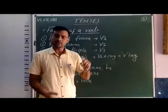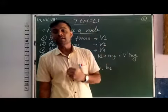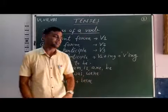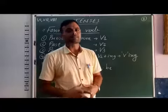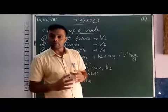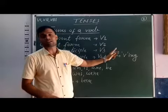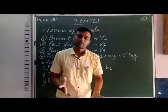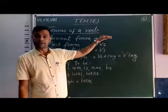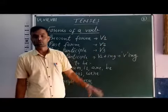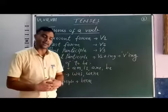Remember: four forms of verb — present form V1, past form V2, past participle V3, and present participle meaning verb with -ing. In all twelve tenses, the main verb used is V1, V2, V3, or verb with -ing respectively, depending on the tense of the sentence.